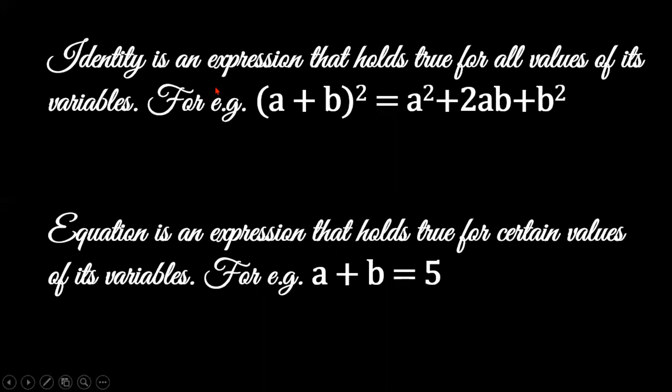So, yesterday we read it, isn't it? An identity is an expression that holds true for all values of its variables. For example, (a + b)² is equal to a² + 2ab + b². You can put any values of a and b, it will hold true.